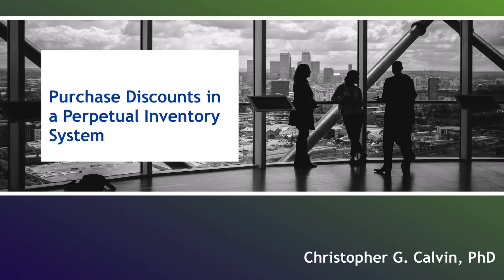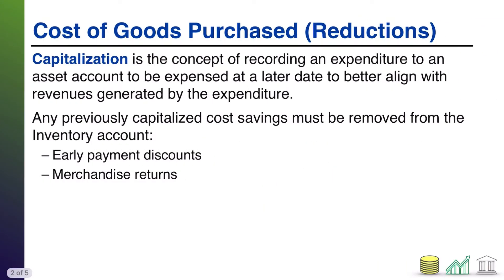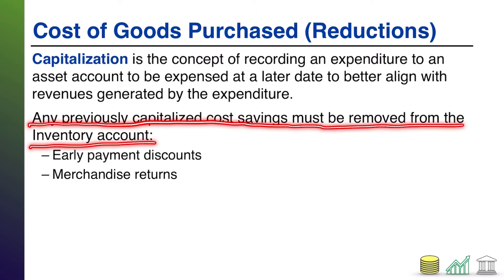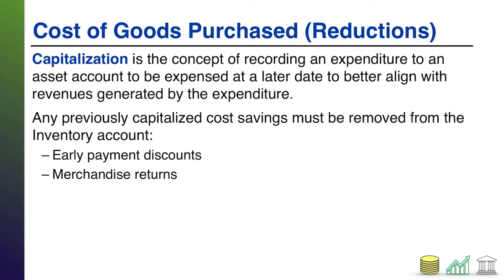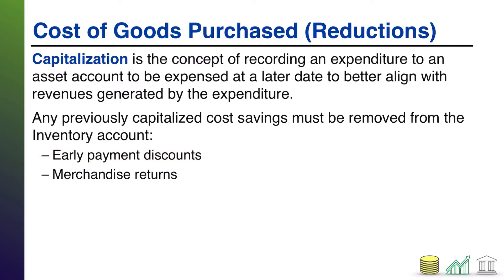In this video, I'm going to walk you through the accounting for purchase discounts in a perpetual inventory system. When you buy inventory, you're allowed to capitalize the cost of that inventory to your inventory account — that's known as cost of goods purchased. However, any previously capitalized cost savings must be removed from your inventory account if you receive them. One reason this happens is because you receive an early payment discount, and that's what I'm going to talk about in this video.